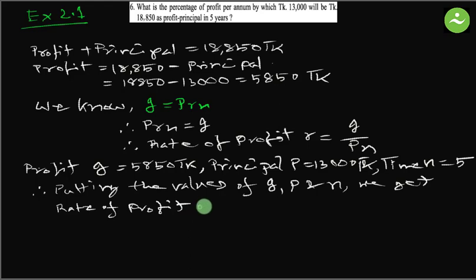Equals I is 5,850, P is 13,000, and N is 5. Now we can just simplify, taking 10 off, so it becomes 585 divided by 1,300 multiply 5.